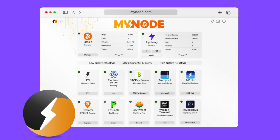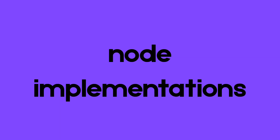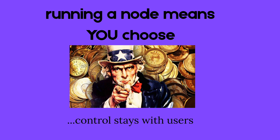Whichever device you decide to use, you will need to make sure it meets the minimum requirements in storage, RAM, internet connection, and uptime. When you run a Bitcoin node, you get to choose what software it runs, and that choice is what keeps control in the hands of the users, not developers or companies.